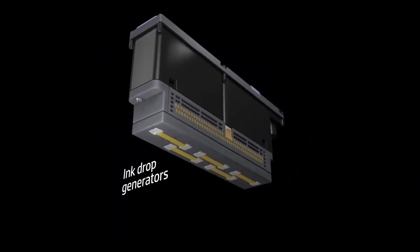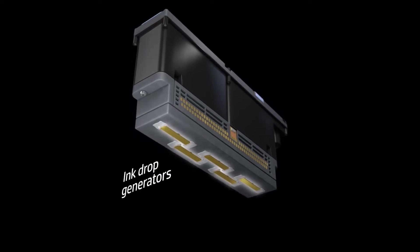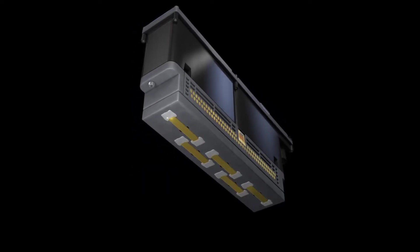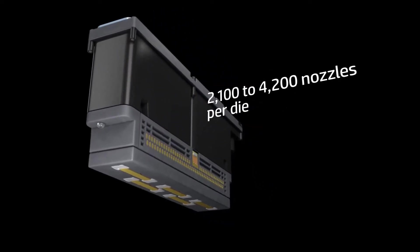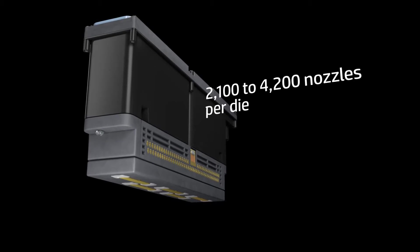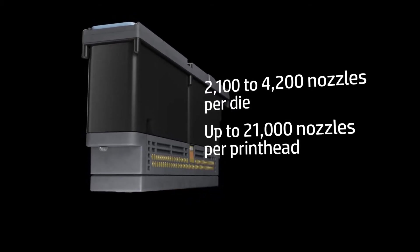The ink drop generators are on five staggered silicon chips called die placed along the bottom. Each die is about an inch long and can have 2,100 and even 4,200 nozzles. So some versions of this printhead have 21,000 nozzles.